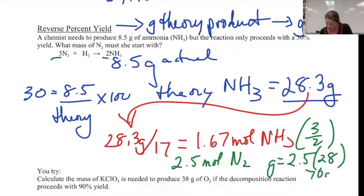We're going to have to start with 70 grams of N2 in order to aim for 28.3 grams of NH3 in order to really get 8.5 grams. Here's a reverse percent yield problem for you to try.